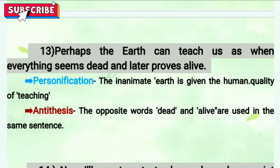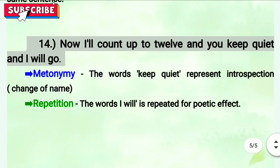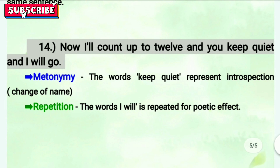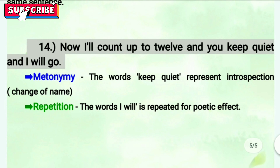Fourteenth line: 'Now I'll count up to twelve and you keep quiet and I will go.' The first figure of speech is metonymy — 'keeping quiet' doesn't only mean to be quiet; it represents introspection, so there is a change of name used for poetic effect. The next figure of speech is repetition — 'I'll' and 'I will' are repeated for poetic effect.